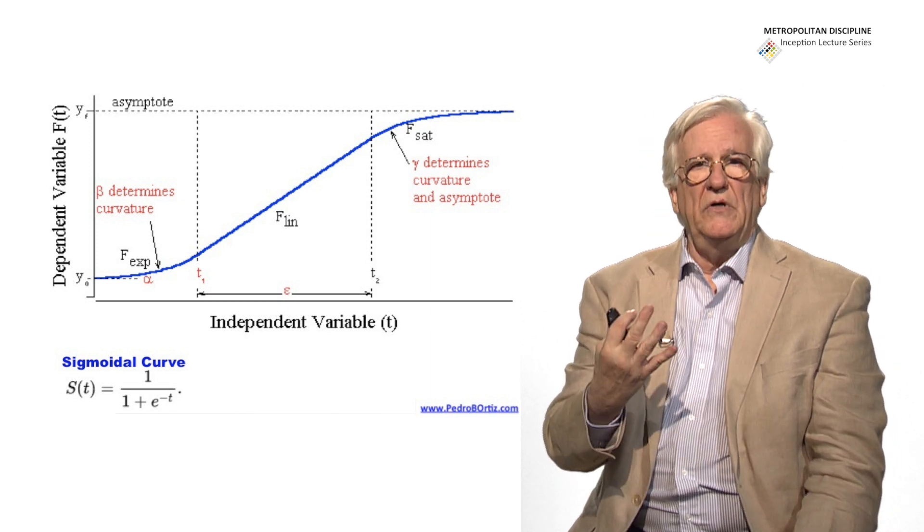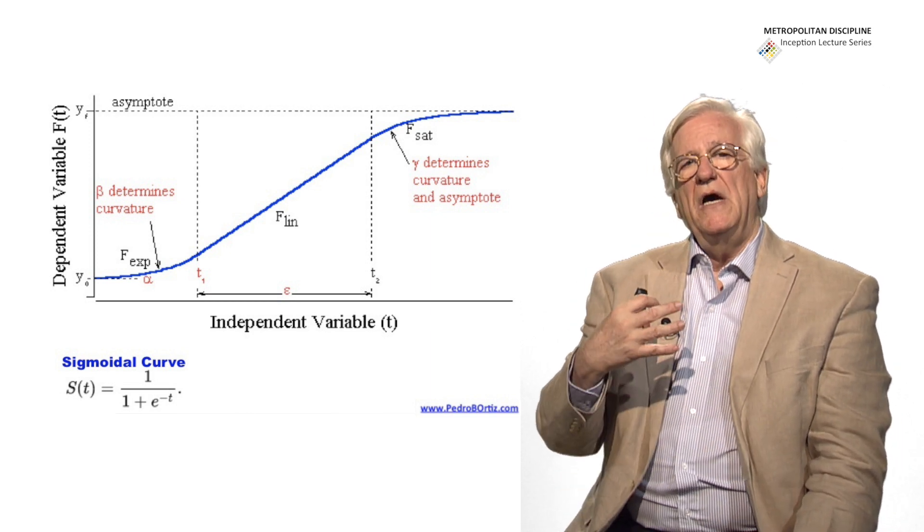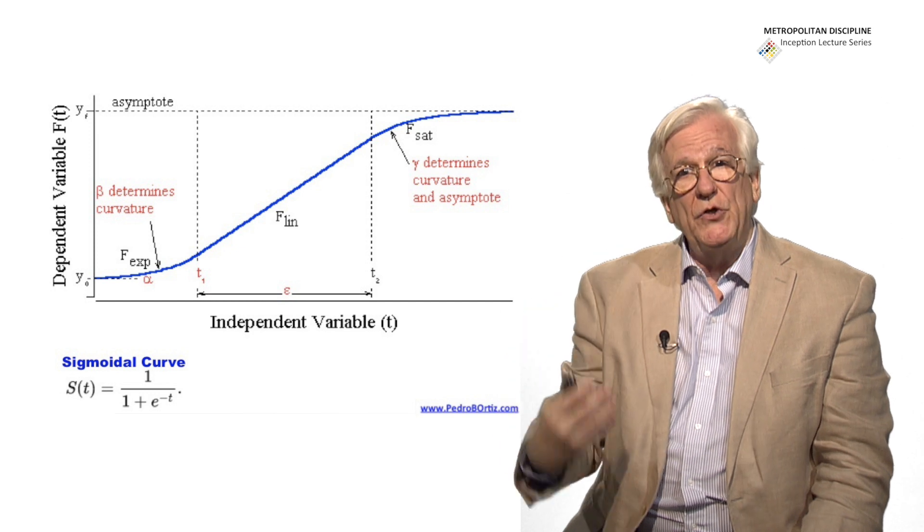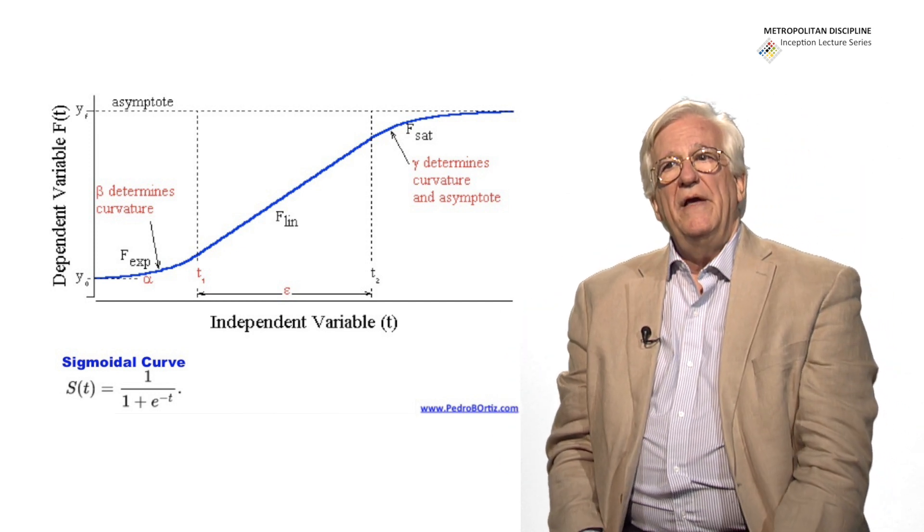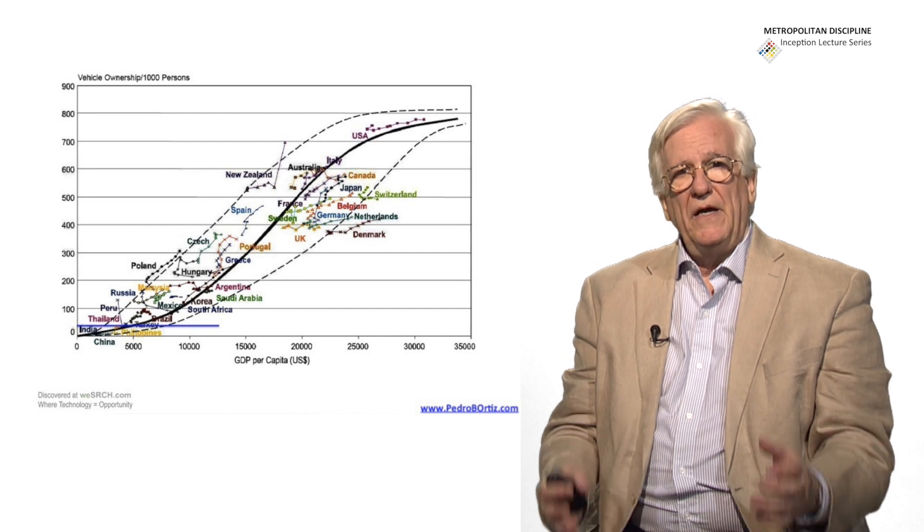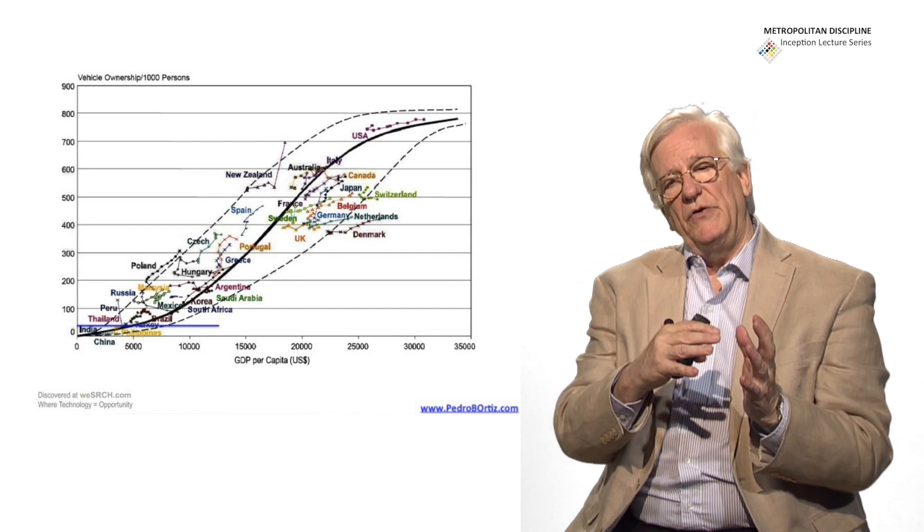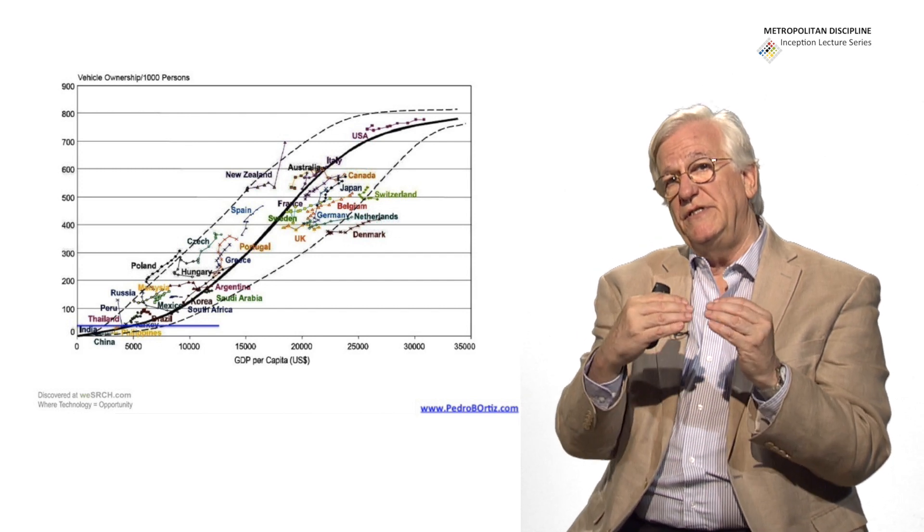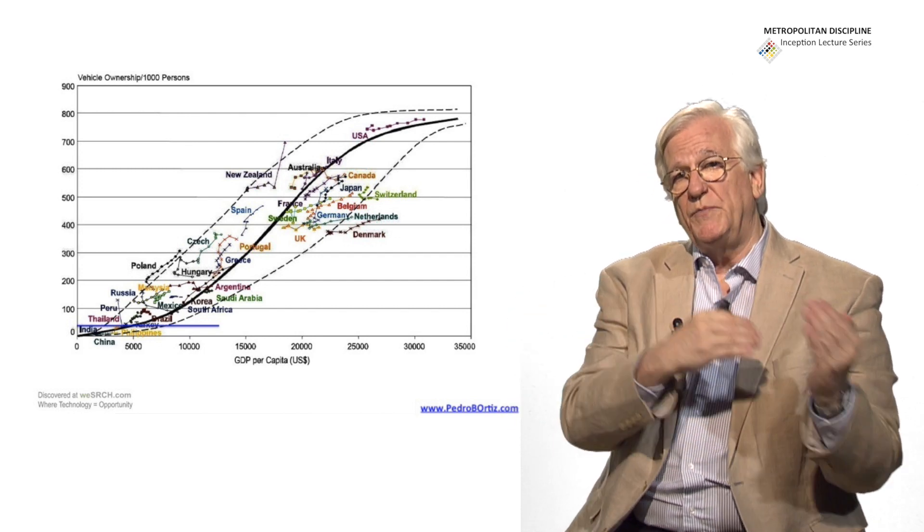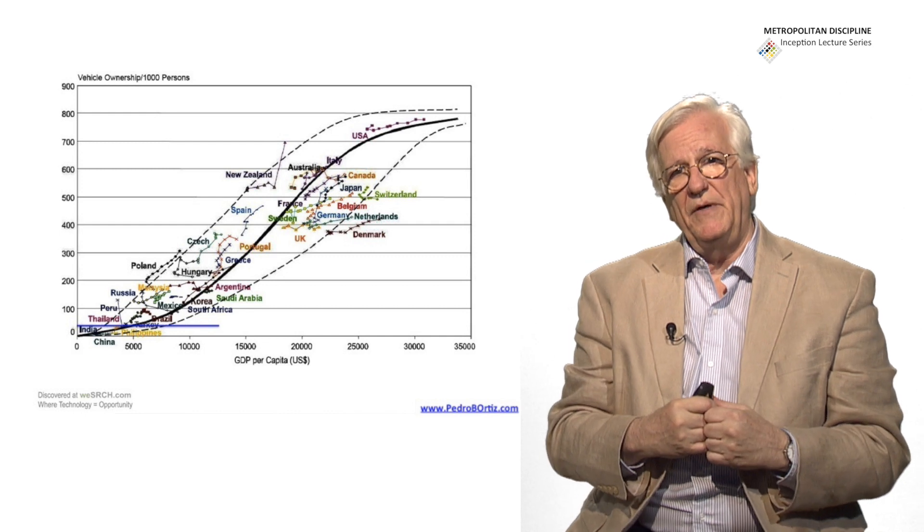And we must understand that some of those metropolitan phenomena work within that sigmoid curve. For instance, we saw the population, the car ownership. Car ownership generally saturates when you reach a level of 0.7 cars per person, 7 cars every 10 people.